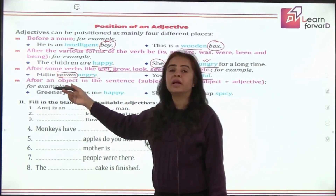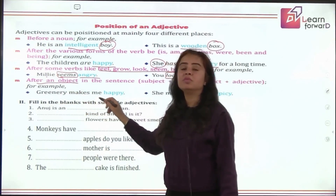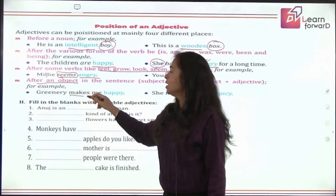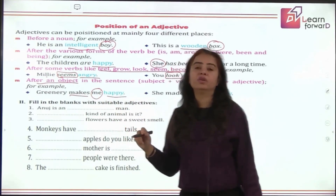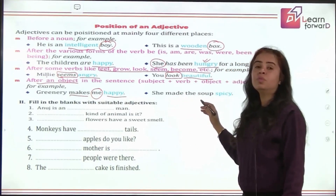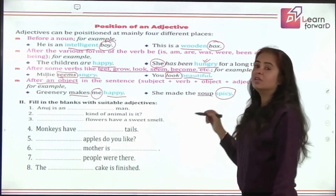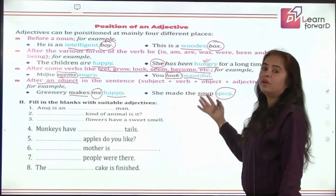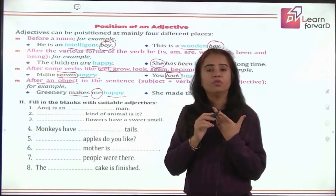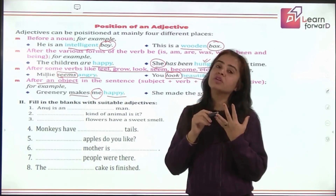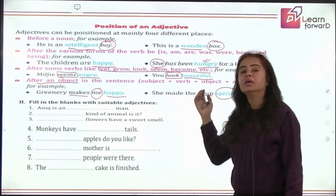Sometimes adjectives are also placed after an object. 'She makes me happy' — 'me' is the object and 'happy' is written after it. Similarly, 'She made the soup spicy' — 'soup' is the object and 'spicy' is written after it. So adjectives can be placed before nouns, after nouns, after verbs, and after objects, depending on the type of sentence.